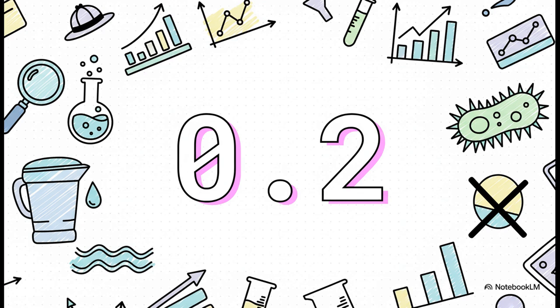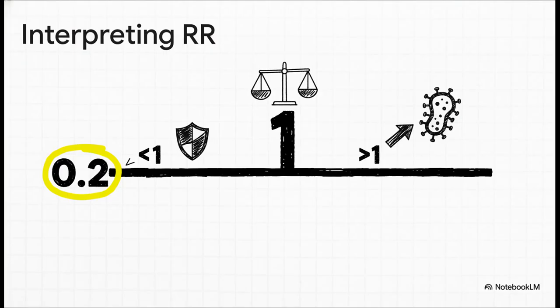So, what in the world does 0.2 actually mean? This is the secret decoder ring. If the RR is 1, it means there's no difference at all. If it's more than 1, the exposure is risky. But if it's less than 1, like ours, that means the exposure is protective. It's a good thing. So, our RR of 0.2, it means the folks using the new filter had only 20% of the risk of getting cholera compared to the other group. I mean, that's an 80% drop in risk. That is huge.